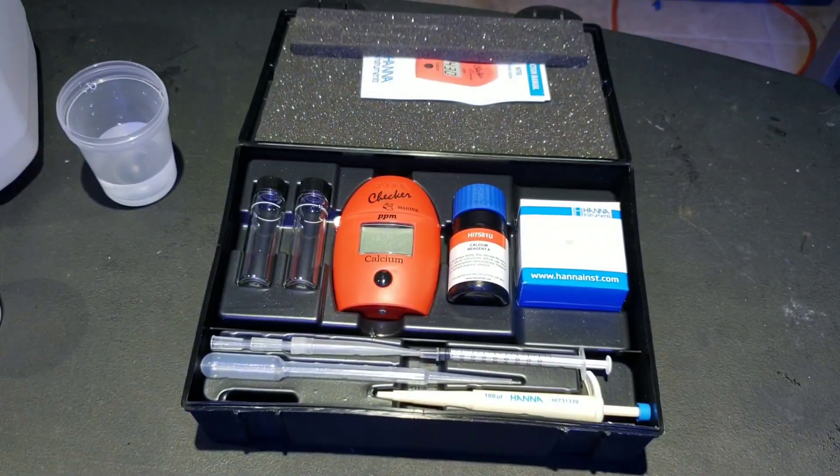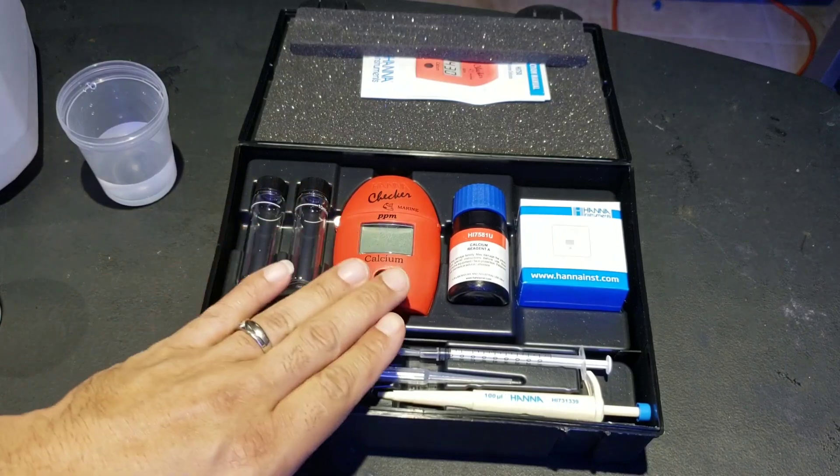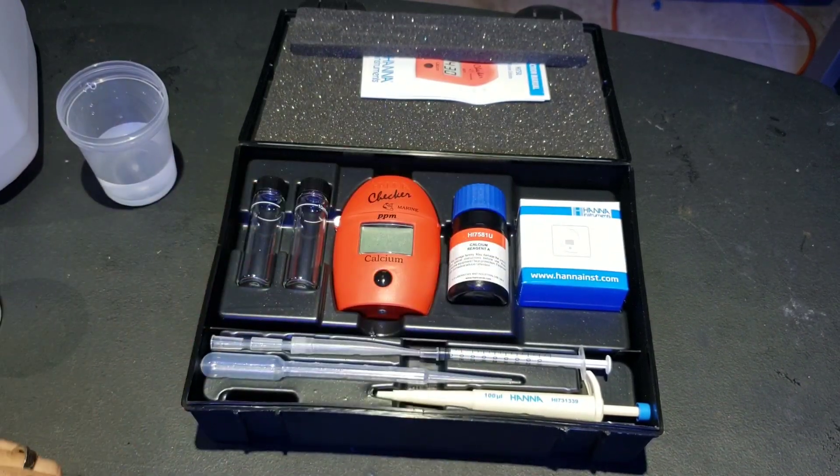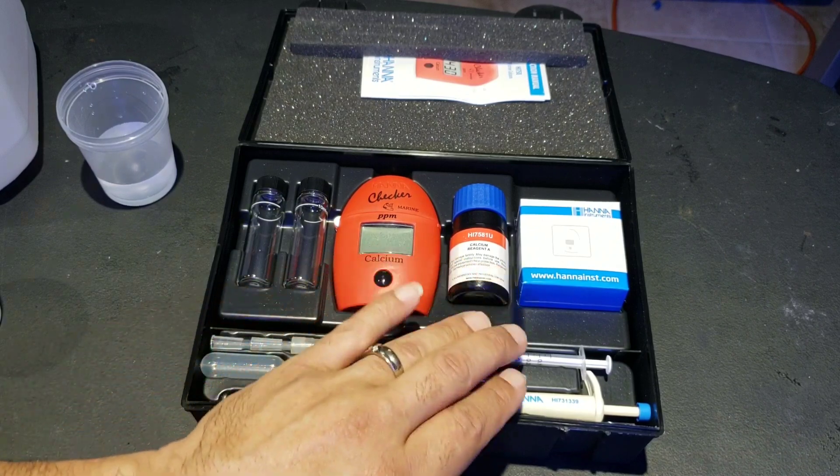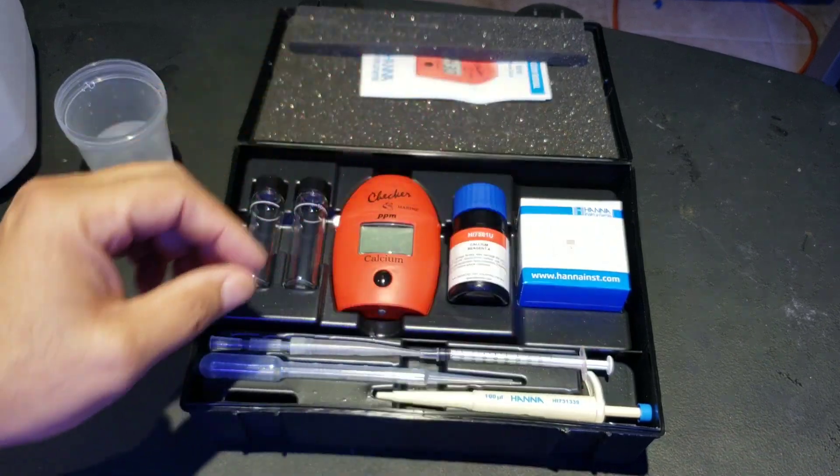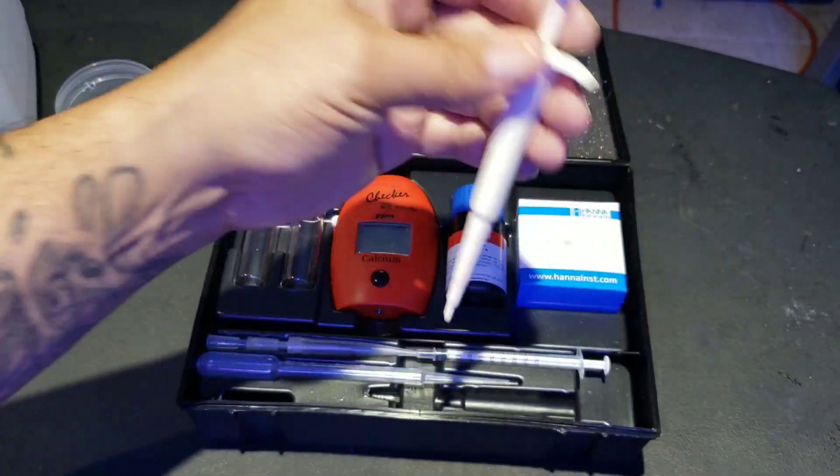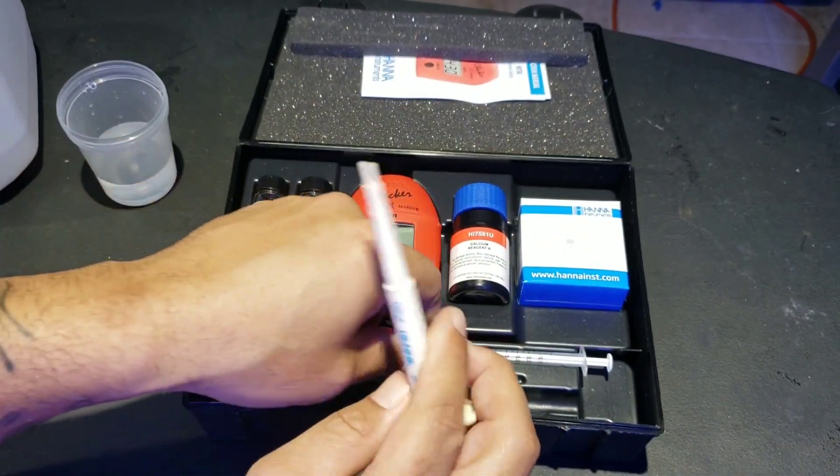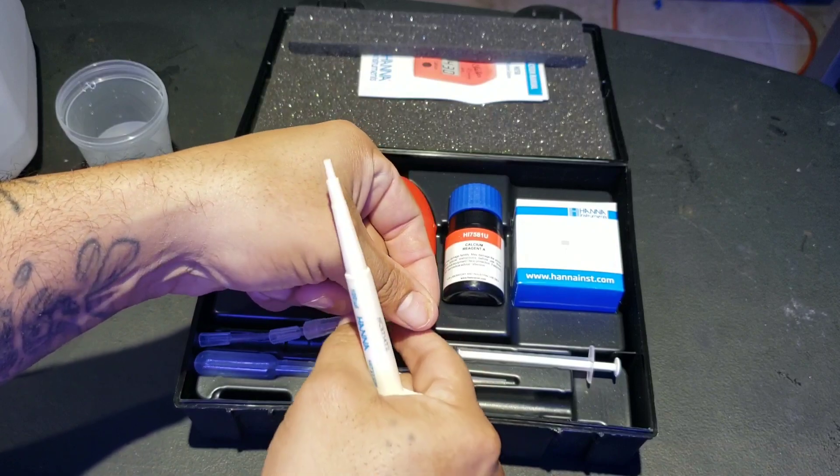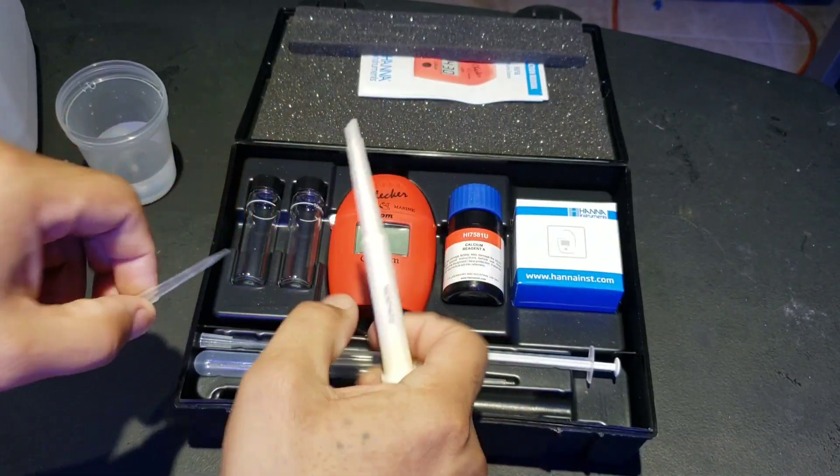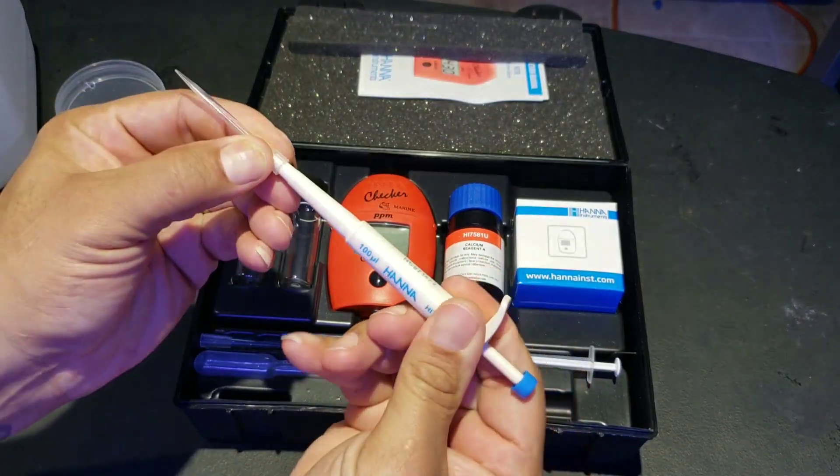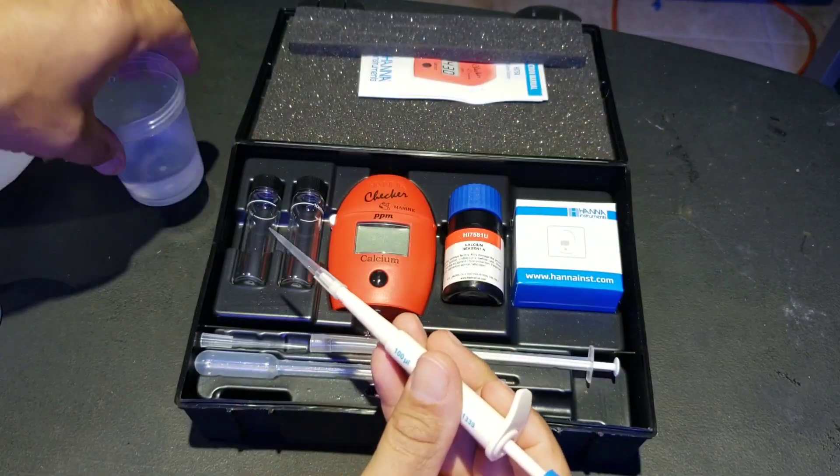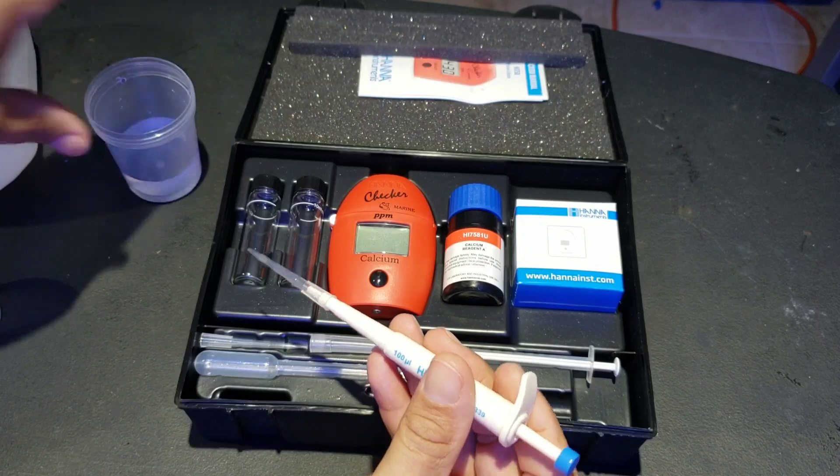So we have several things going on here. We have the cuvettes. We have the actual Hanna checker. We have the solution, reagents. You might as well say reagent A, B. We have the pipette here. Now, a lot of people had problems back in the day with this because it didn't come with this. This is very important for sample. I do have my sample water here from the tank.